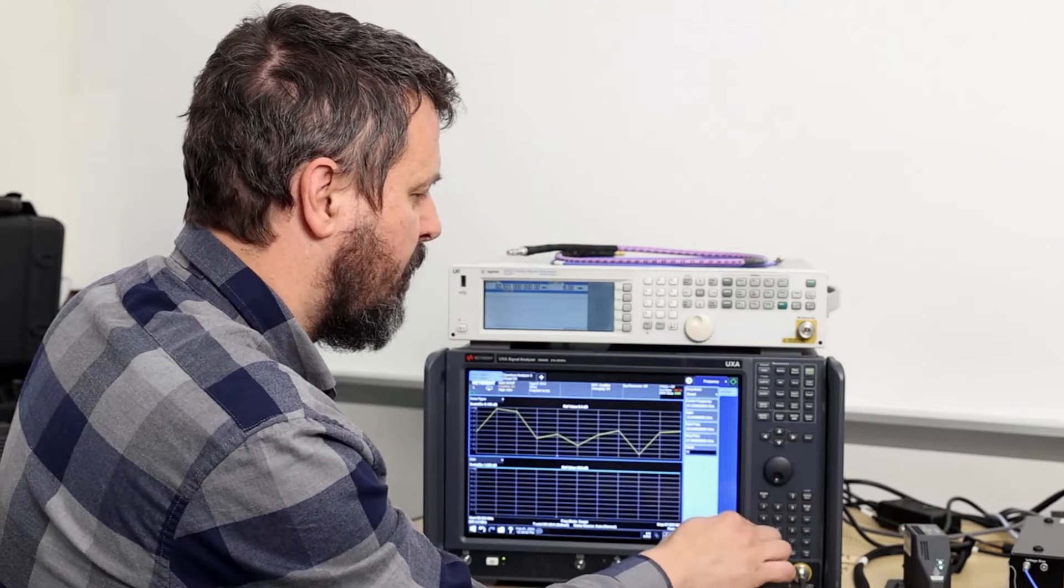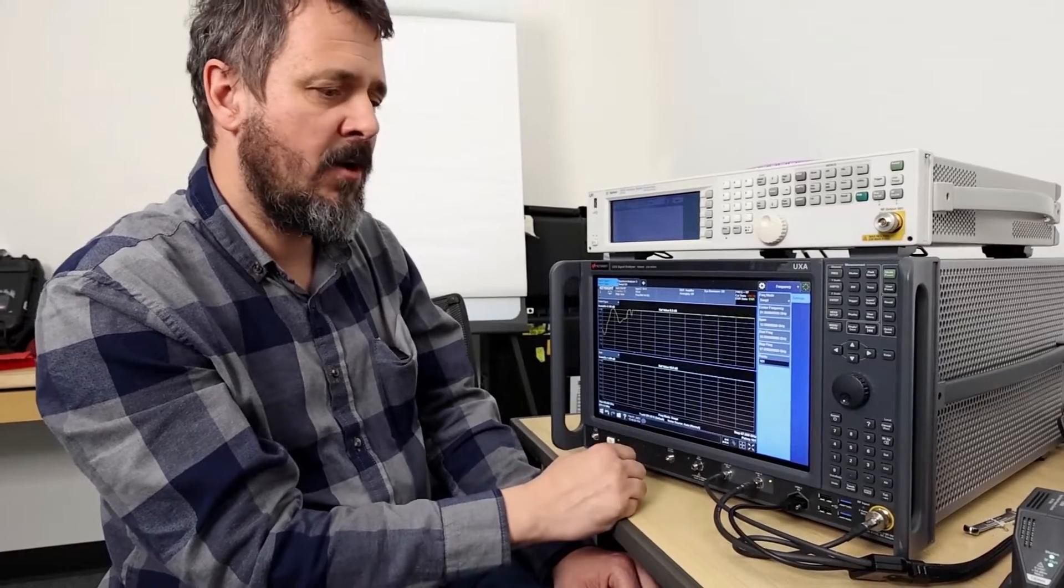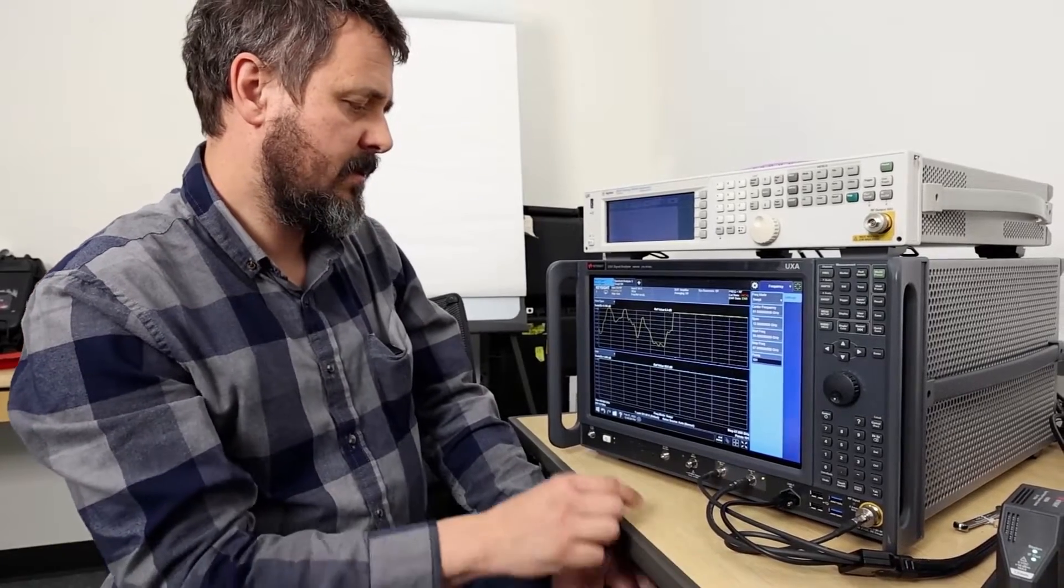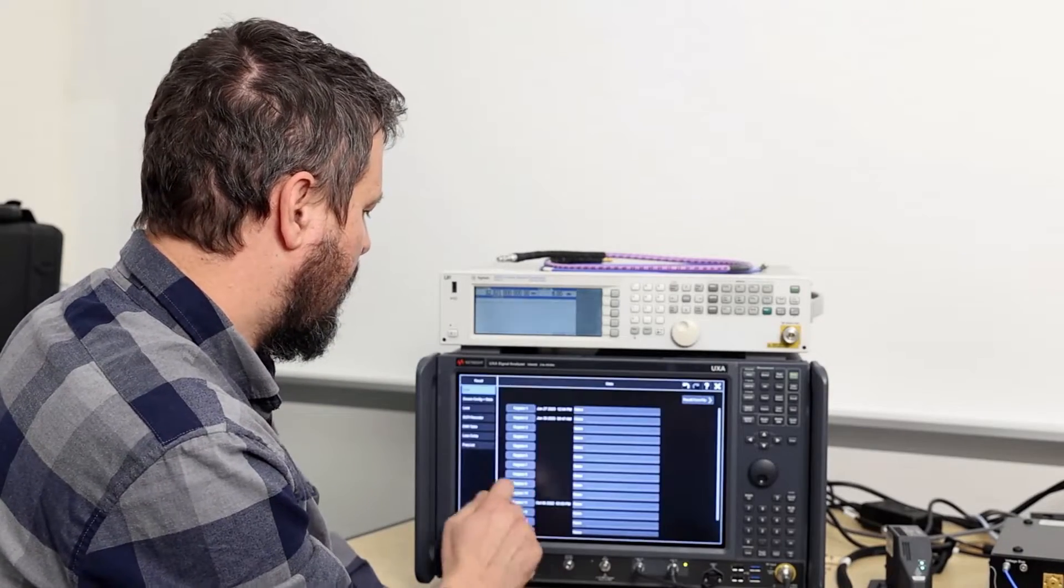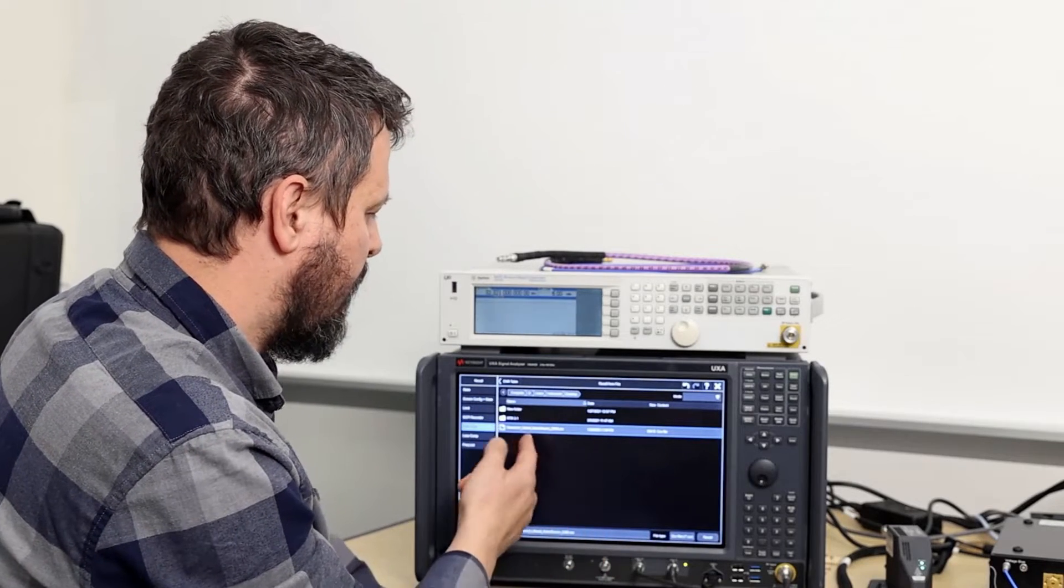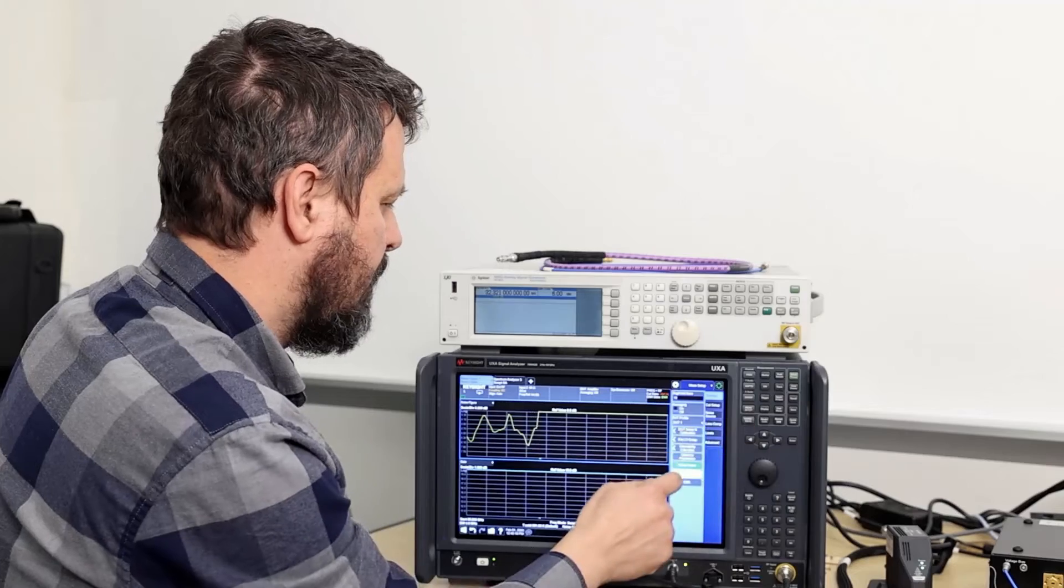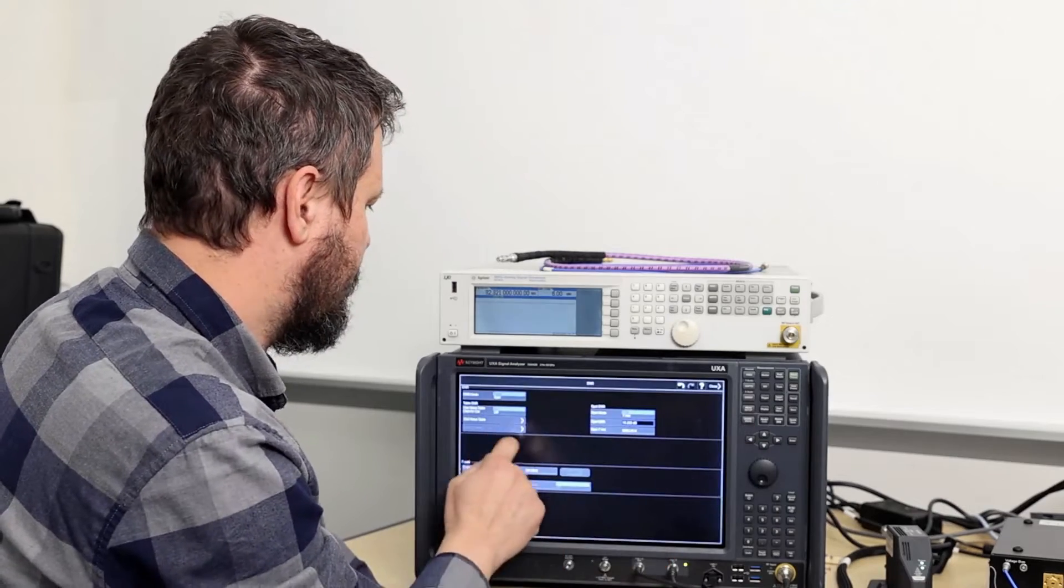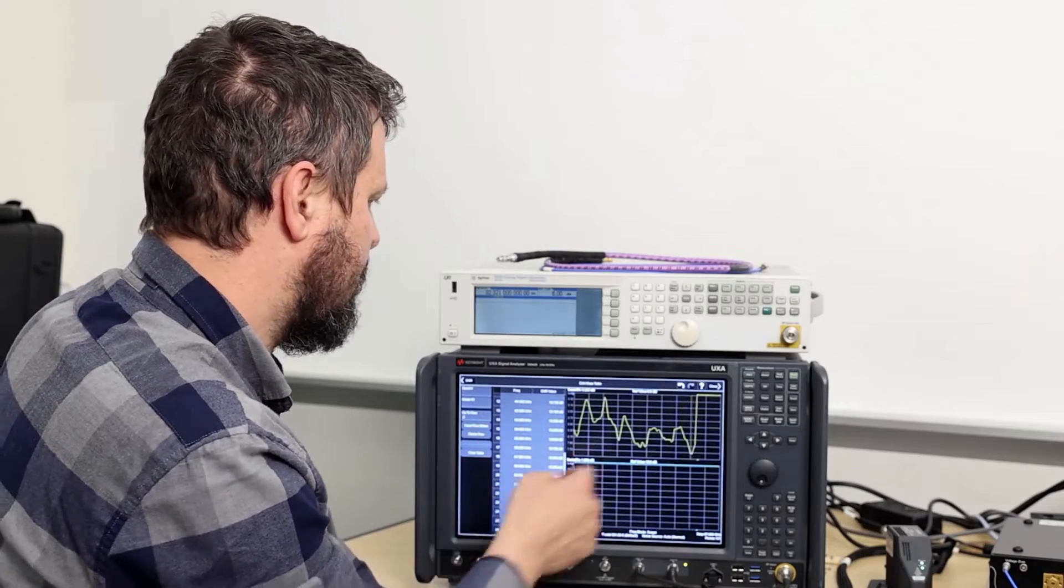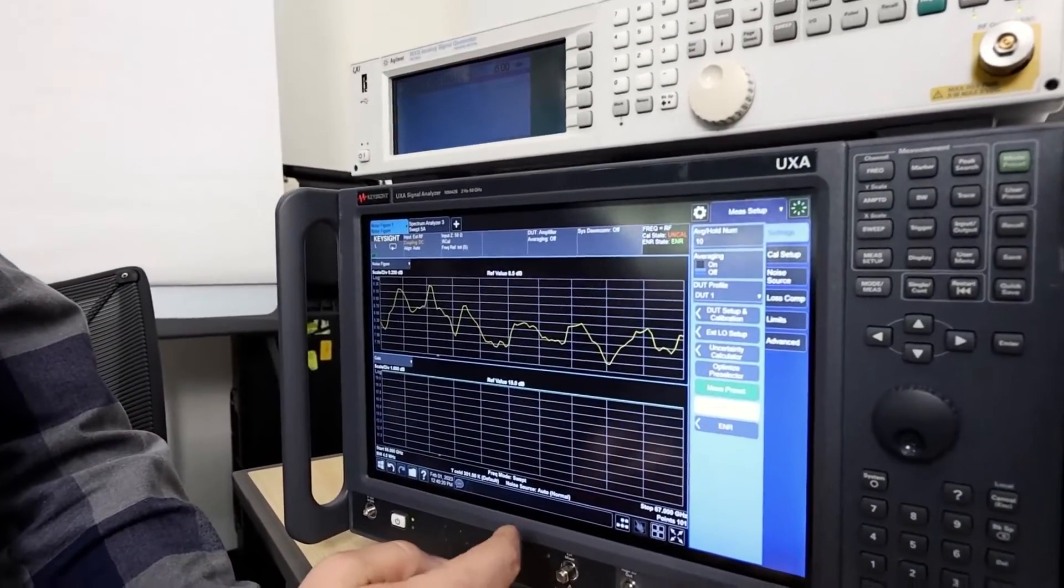I'm going to set 101 points and then I need to load my cal factors for my ENR source. So I'll just go and recall ENR table and I stored it on my desktop. I can look at my ENR values in the ENR table. Here's all my ENR values. So that looks good. It's not giving me any warning messages.